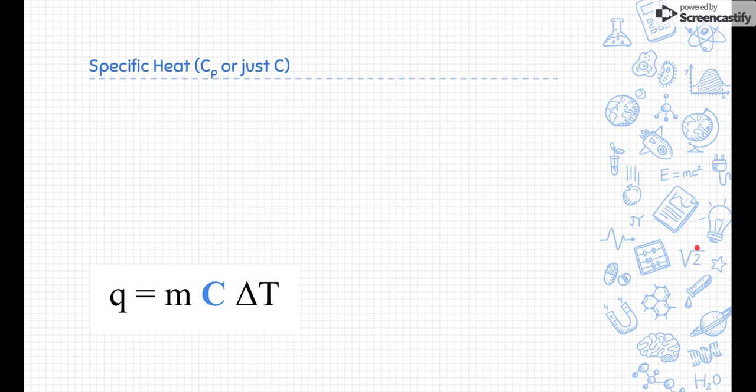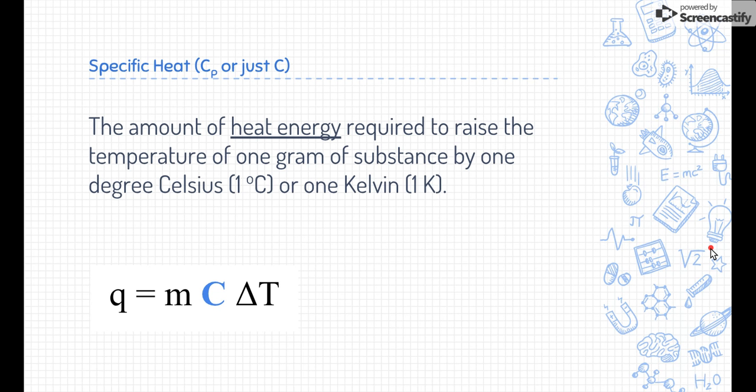Let's talk about the specific heat. So this formula down here is known as the specific heat equation and it's really important. Before I show you what each of the pieces of the formula are, the amount of heat energy required to raise the temperature of one gram of substance by one degree Celsius or Kelvin is called the specific heat. Now that's a mouthful. It's just literally the amount of heat energy that we need to change the temperature of something. And it's a specific temperature, one degree Celsius or one degree Kelvin.